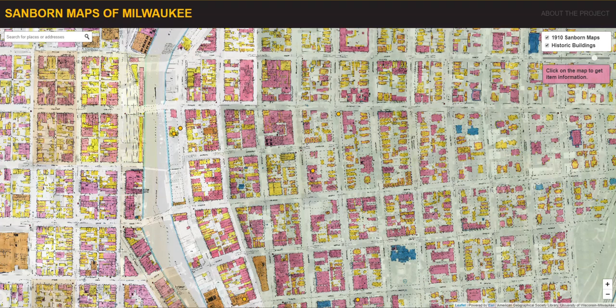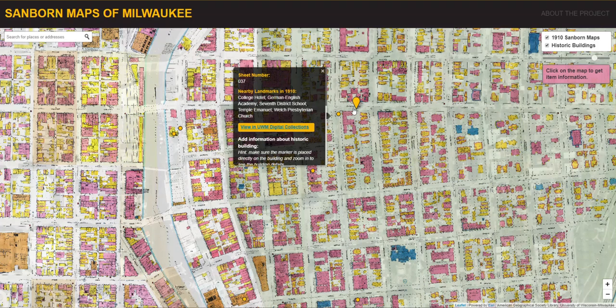The next layer consists of polygon boundaries of each map sheet created by the American Geographical Society Library and exported to a GeoJSON for use in our Leaflet application. This is what allows users to click on the map and get information about the map sheet. They are shown with 100% transparency so that they run completely in the background.